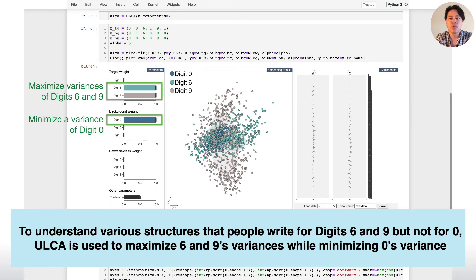With this setting, we can identify various structures that people write for digits 6 and 9, but not for 0.